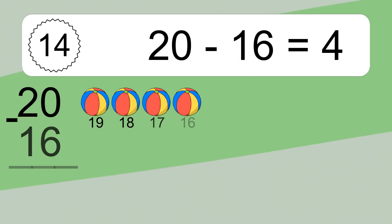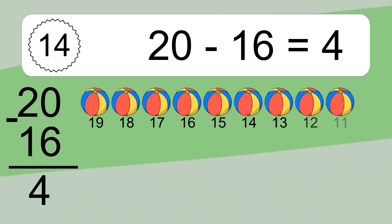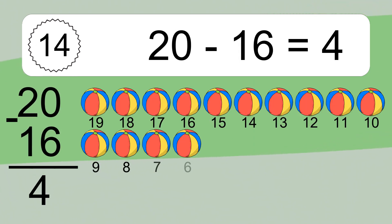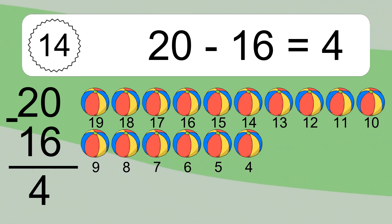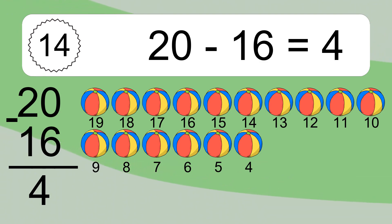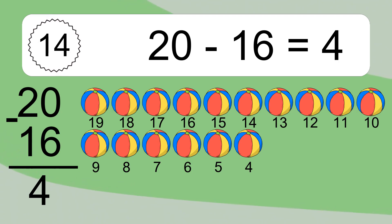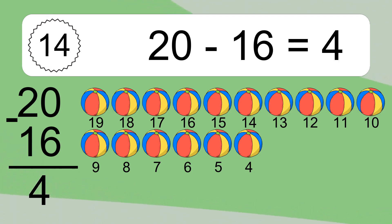20 minus 16 equals what? 20 minus 16 equals 4. Let's count it: 19, 18, 17, 16, 15, 14, 13, 12, 11, 10, 9, 8, 7, 6, 5, 4.